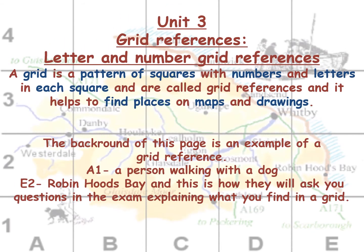Unit 3: Grid References. A grid is a pattern of squares with numbers and letters. Each square is called a grid reference, and it helps to find places on maps and drawings. If you look carefully at the background of this picture or on the page, it's a grid reference — A1 shows a person walking with a dog.